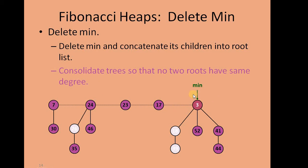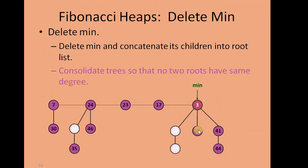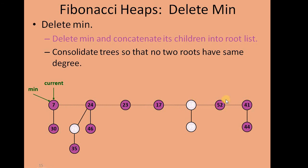Let's see how this is done. We delete the min element, and the remaining tree's three child nodes join the root list of the other tree — this is the concatenation. After deleting the min node, those three nodes come up and join the root list, as we can see in the diagram.